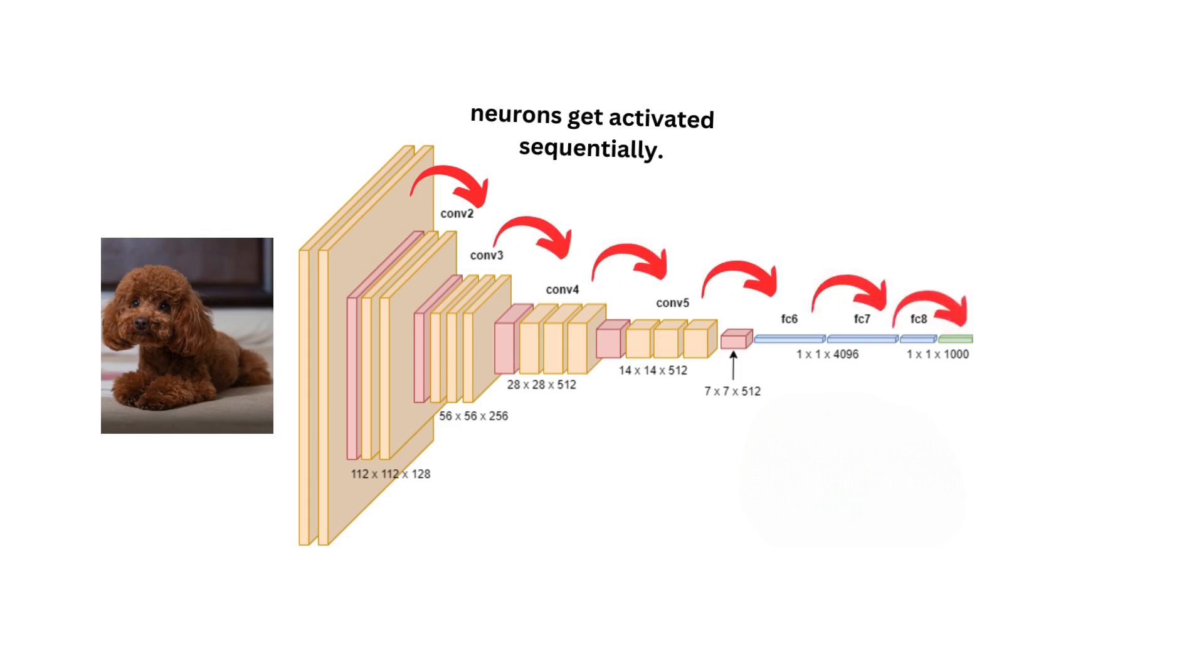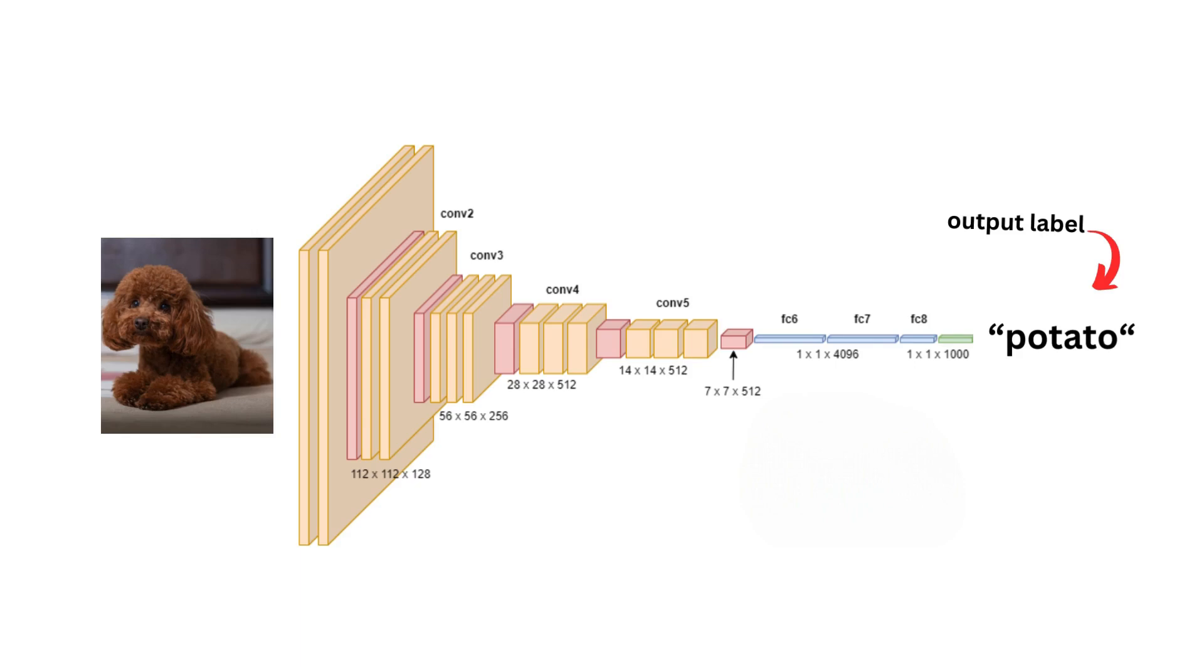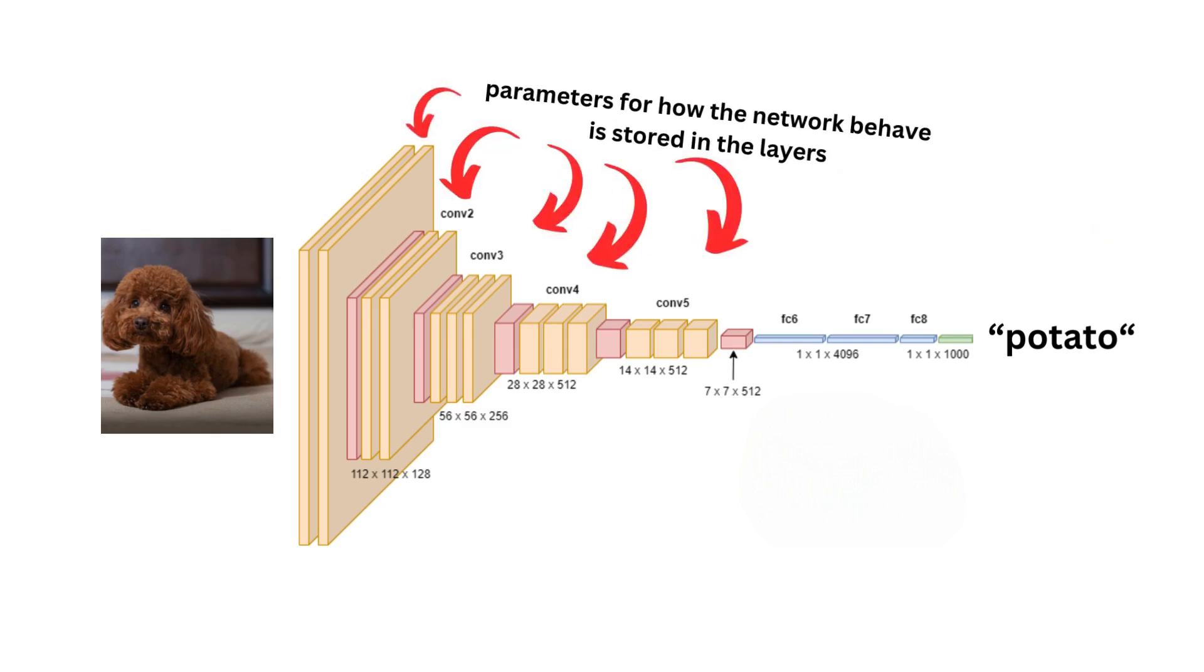The usual flow is: first we'll pass an input image into the network. This input image activates neurons in the various layers sequentially. Then at the end, a label is given out of multiple classes. In this case, it's classified the image as a potato.